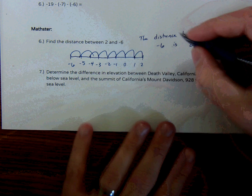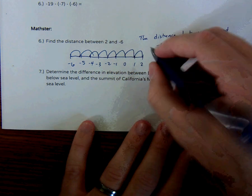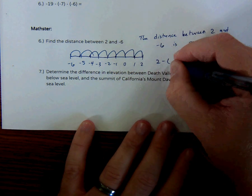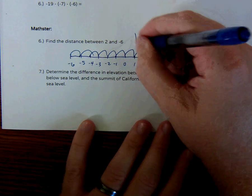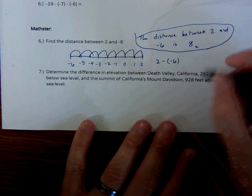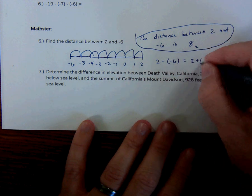Now, there's other ways to do this. We could have said 2 minus negative 6. Remember, I said distance is like subtracting. 2 minus negative 6. Well, that's equal to 2 plus 6, which is 8.